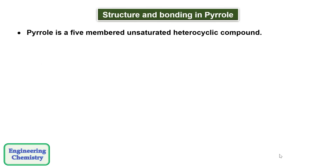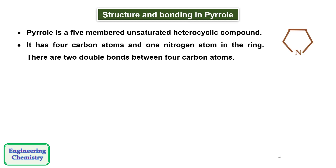Pyrrole is a five-membered unsaturated heterocyclic compound. Unsaturated means the compound in which double bonds and triple bonds are present. Heterocyclic compound means there is a presence of a heteroatom such as nitrogen, oxygen, and sulfur. Thus, Pyrrole has four carbon atoms and one nitrogen atom in the ring.